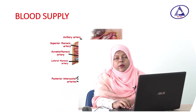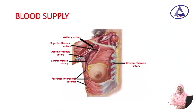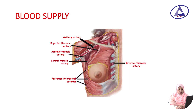Blood supply of the breast: the breast is supplied by branches of the axillary artery, internal thoracic artery, and posterior intercostal artery. On the medial side, it is supplied by the branch of the internal thoracic artery. On the lateral and posterior side, it is supplied mainly by the lateral thoracic branch of the axillary artery, and other branches are the superior thoracic artery and acromiothoracic artery. The posterior and lower portion is supplied by the posterior intercostal arteries.